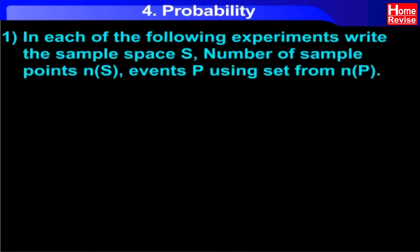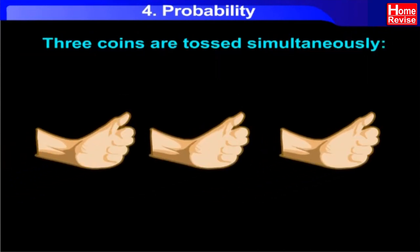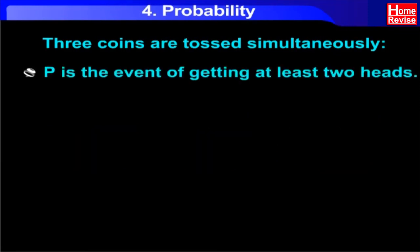Question number one. In each of the following experiments, write the sample space S, number of sample points N(S), events P using set notation and N(E). Three coins are tossed simultaneously. P is the event of getting at least two heads.